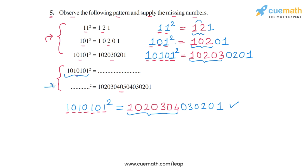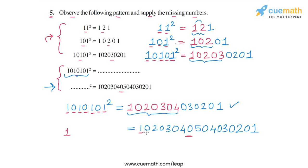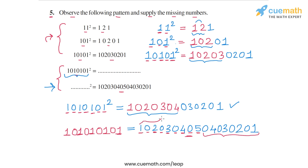For the fifth relationship, we are given the square value 10203040504030201 and must find the base number. Reading the digits: each 1 in the base number corresponds to a rising count — we write one 1 for each count up to the peak digit 5. The portion 04030201 is symmetric to the part before 5, so we stop and conclude the base number is 101010101.